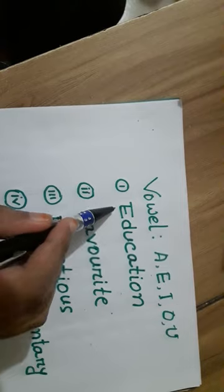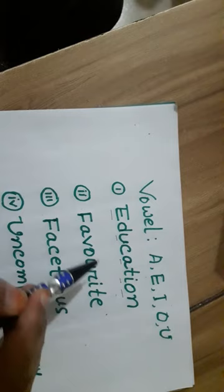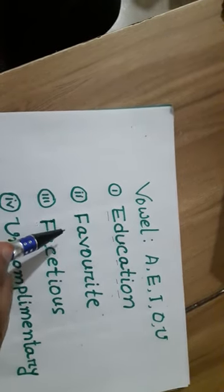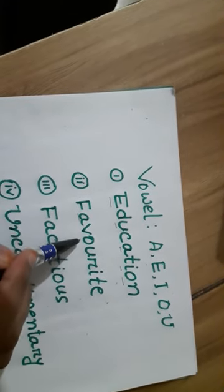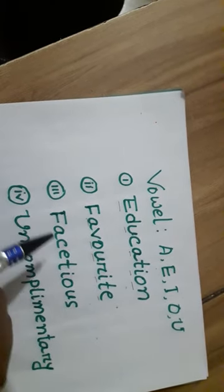And the next, favorite, has A, O, I, E, U - all vowels are here.